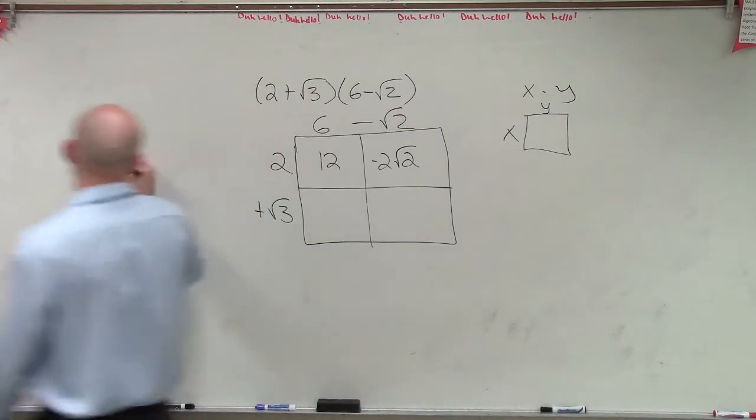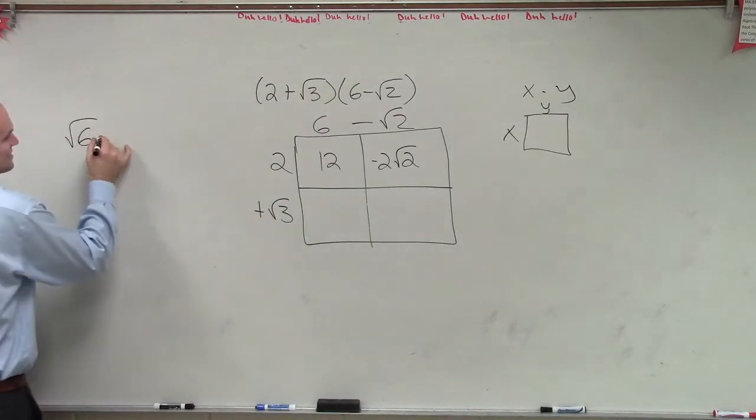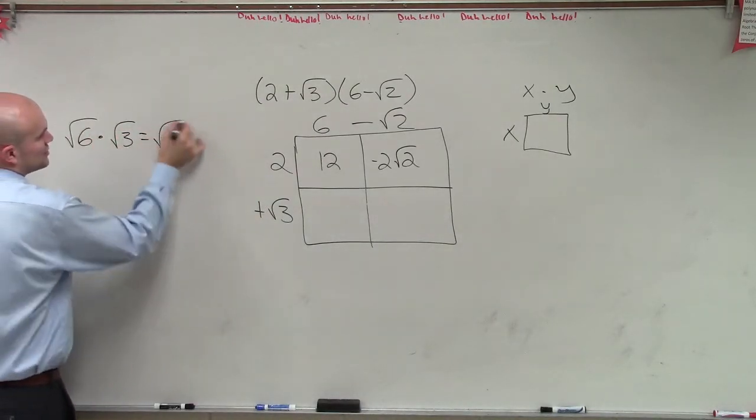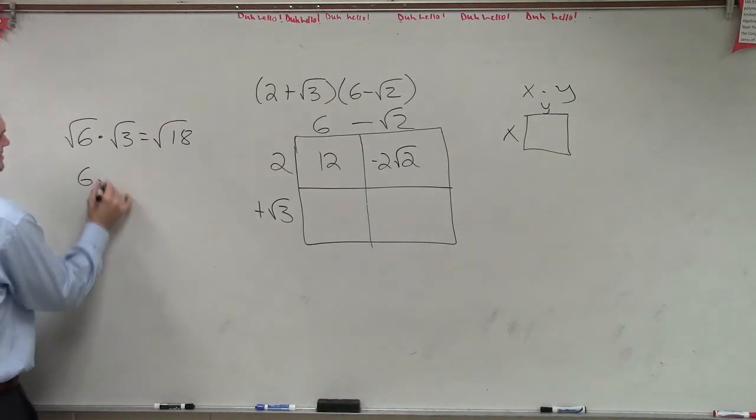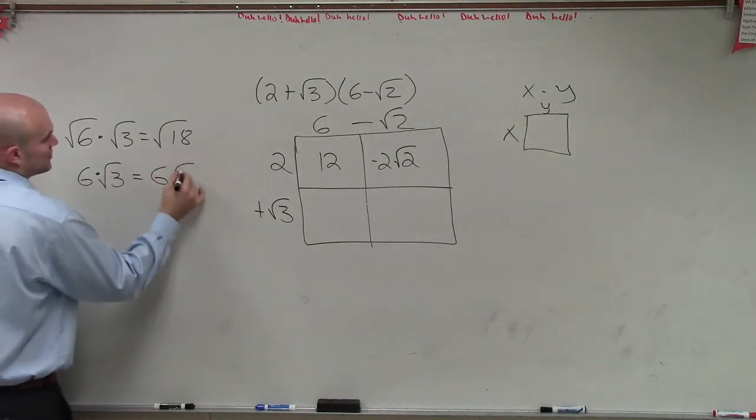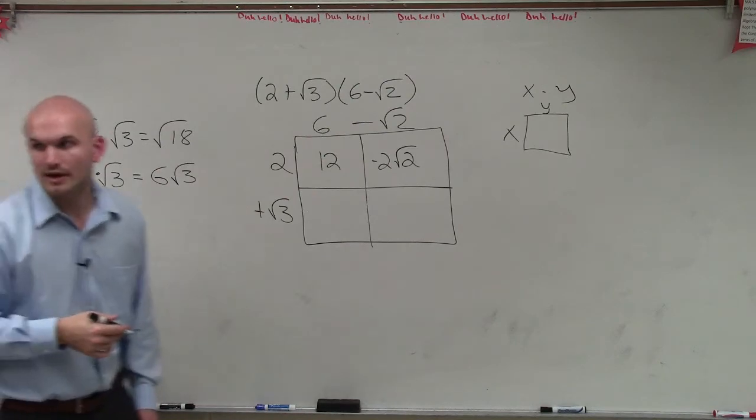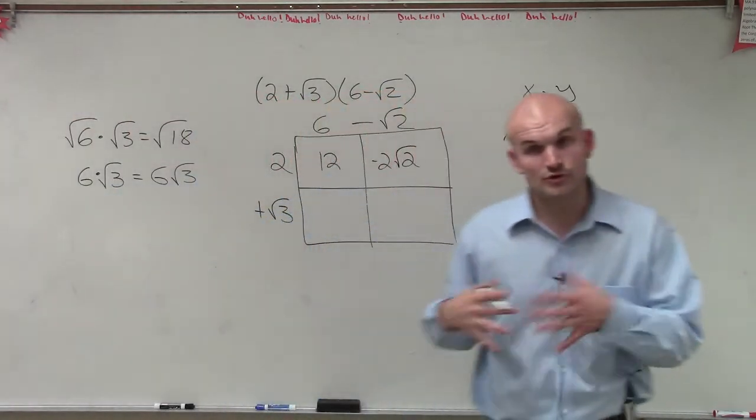So here's my point. If I did the square root of 6, guys, times the square root of 3 equals the square root of 18. 6 times the square root of 3 equals 6 square root of 3. You can't multiply them. All right? They're both under the root, you can do it.